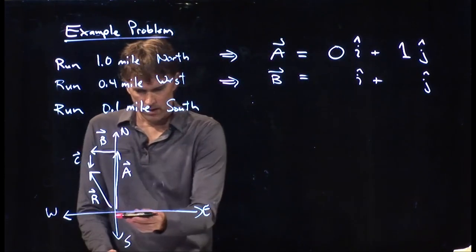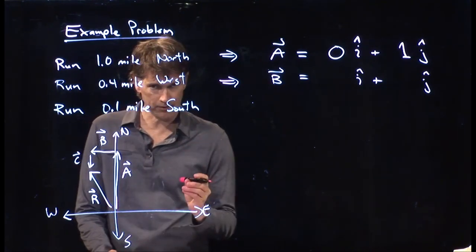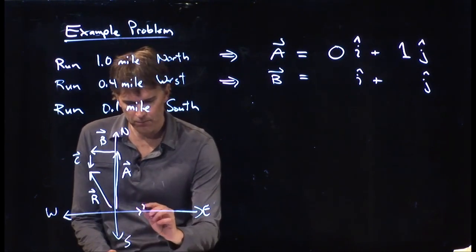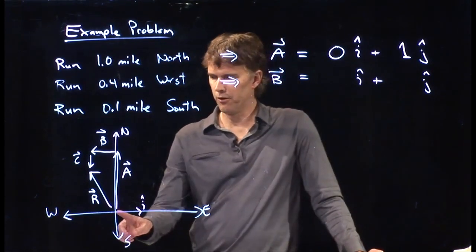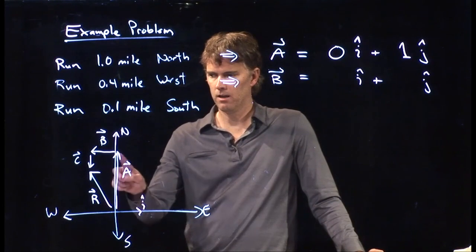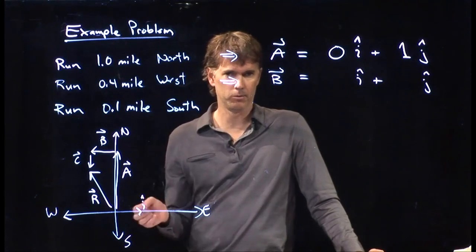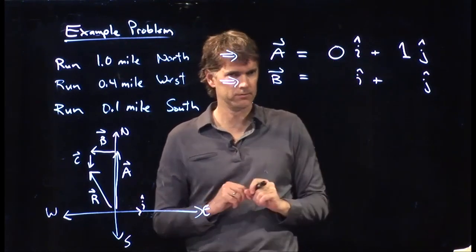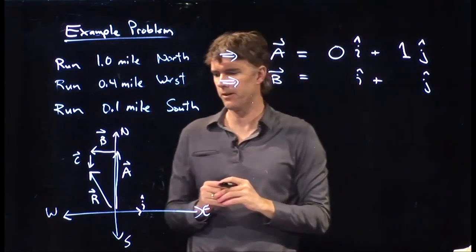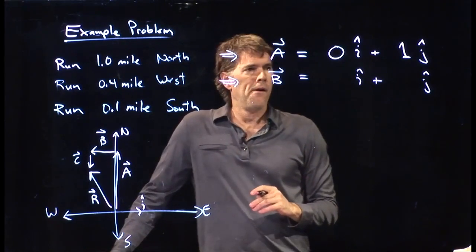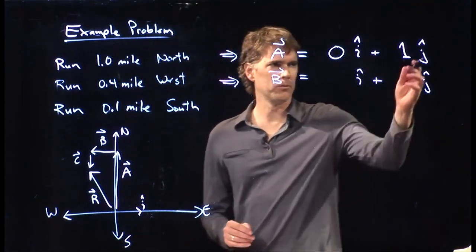So this east axis is what we're going to say is our typical x axis, which means that i hat points along that axis. So for the first vector, vector a, was it going at all in the i hat direction? It was going exactly 0 in the i hat direction. So we don't technically have to write that. We just cross it out entirely, but we're trying to be clear here. And of course, it went 1 in the other direction, 1 mile in the other direction, which is j hat.